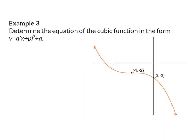In Example 3 we are again asked to determine the equation of the function but this time in a different form. If we look at our sketch we will see that there's only one stationary inflection point given as minus 1, minus 2 and this will be minus p and q in our formula. For p the sign will change in the formula.